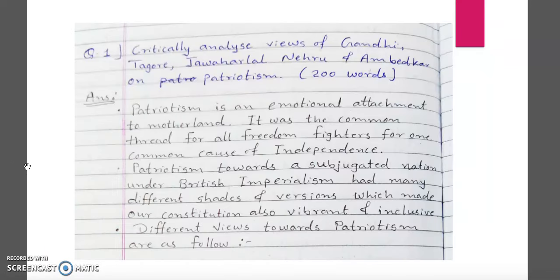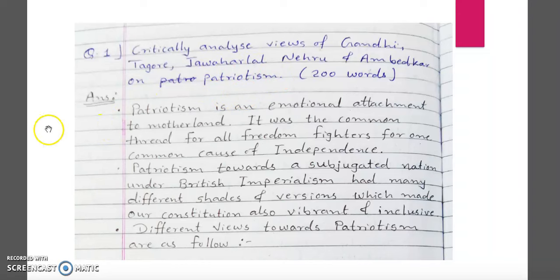Now let's start with the topic. The first question asks to critically analyze the views of Gandhiji, Tagore, Jawaharlal Nehru, and Ambedkar on patriotism. What do we mean by patriotism? Patriotism means Deshbhakti. As we know, many different freedom fighters in India all thought about Deshbhakti or patriotism differently — it meant something different for each and every one of them.